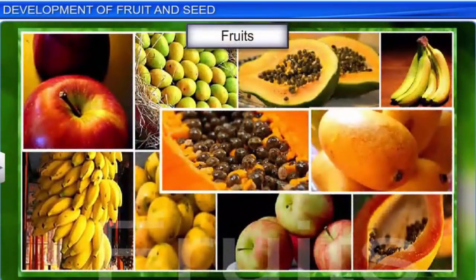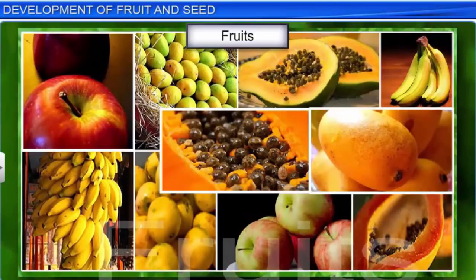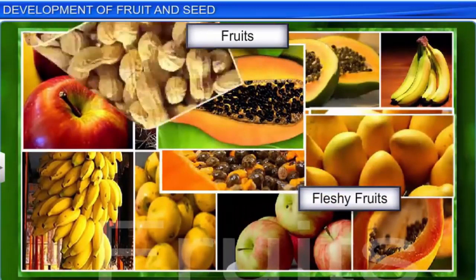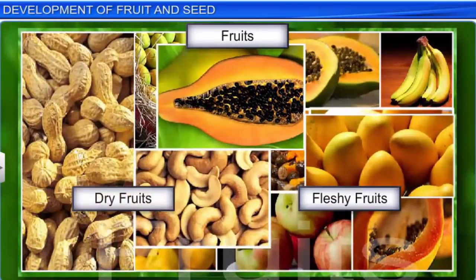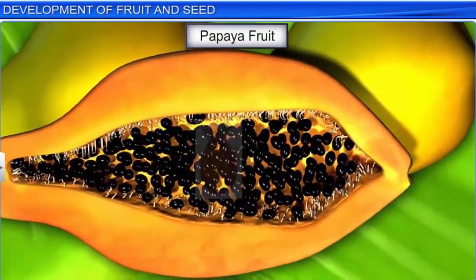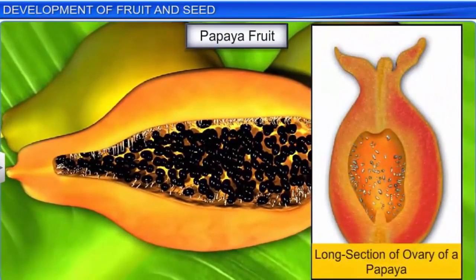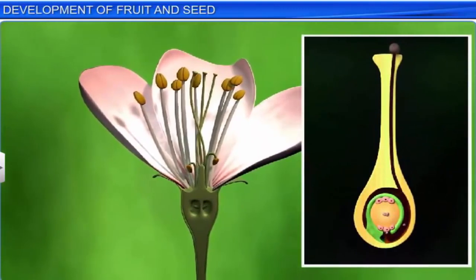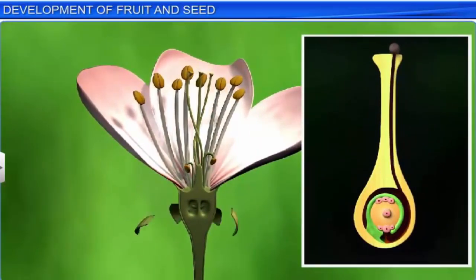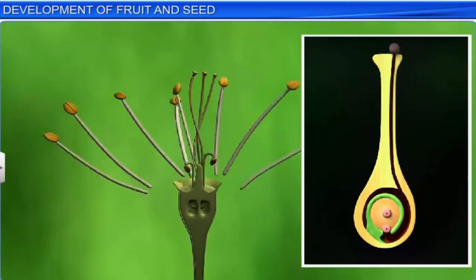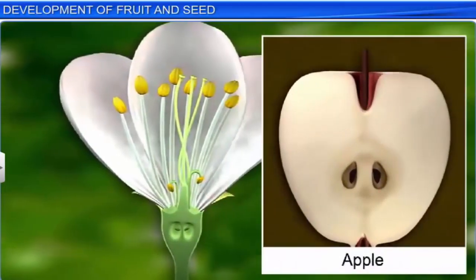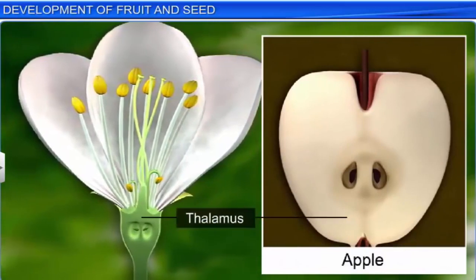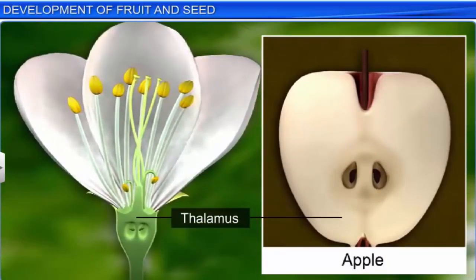For us, fruit means a mango, papaya, apple, or a banana. However, for a botanist, fleshy and juicy mangoes or papayas are as much a fruit as are groundnuts or cashew nuts, which are dry in nature. Fruit — the final product of sexual reproduction — develops from an ovary post-fertilization. In most cases, fertilization and the development of fruit triggers the withering of other parts of the flower including the sepals, petals, and stamens. However, in some cases like apple, floral parts such as the thalamus become a part of the fruit. Such fruit, in which other parts of the flower besides the ovary are involved in the formation of the fruit, are called false fruit.